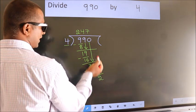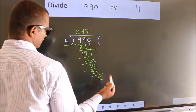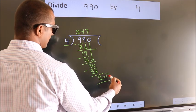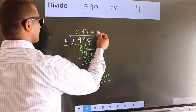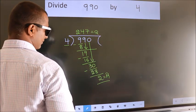No more numbers to bring down. So we stop here. This is our remainder. This is our quotient. Here we go!